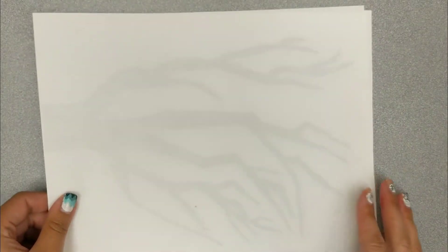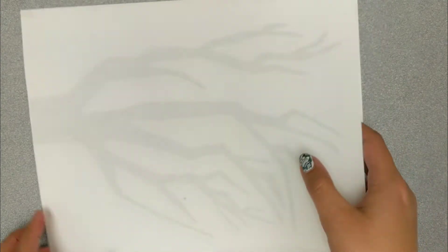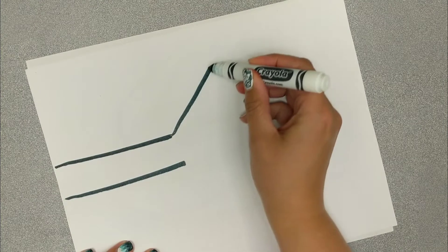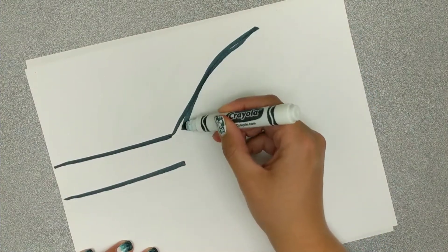If you're at home, you can draw one by drawing two lines and then having it branch out and get smaller as it moves out.